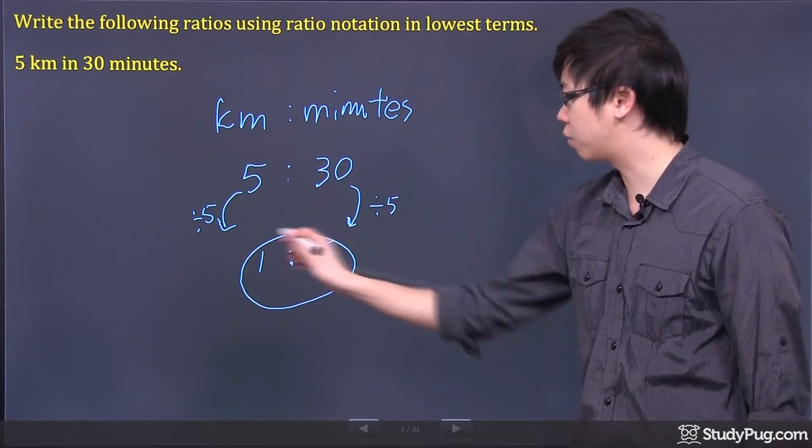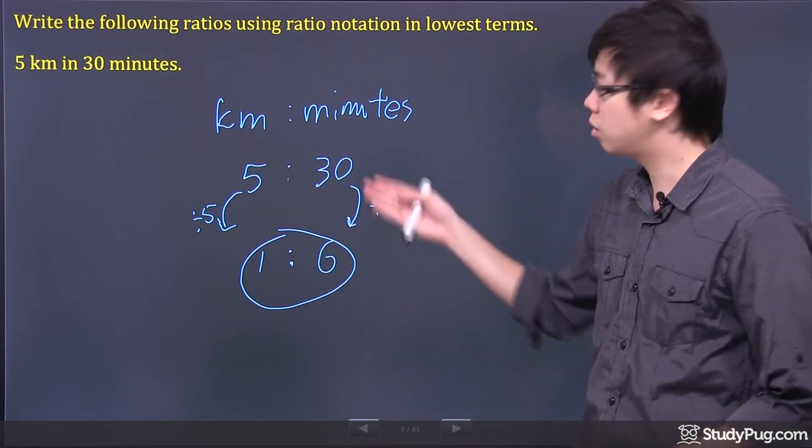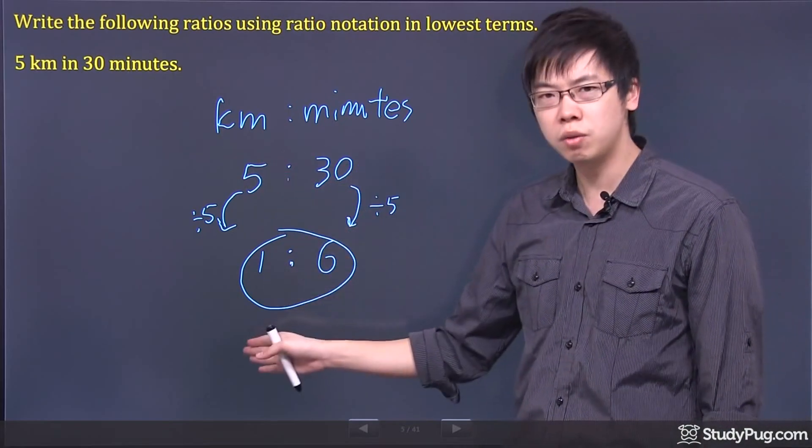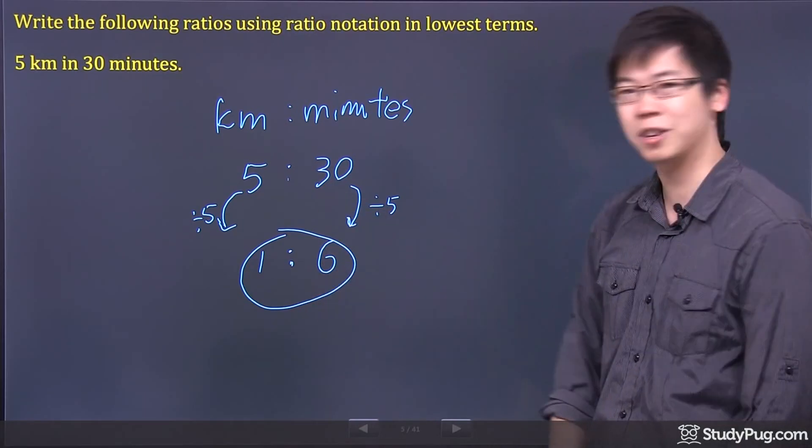So this is the final answer for this question. Basically, instead of five kilometers for every 30 minutes, you're now reducing down to for every kilometer, you have six minutes. And that's your final answer. Thanks for watching.